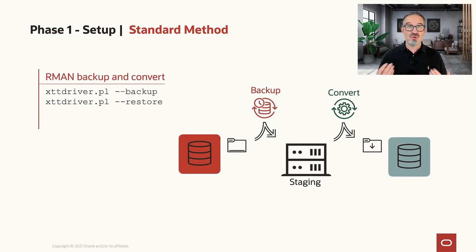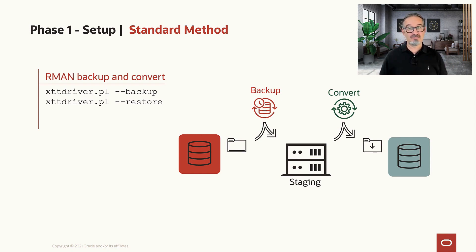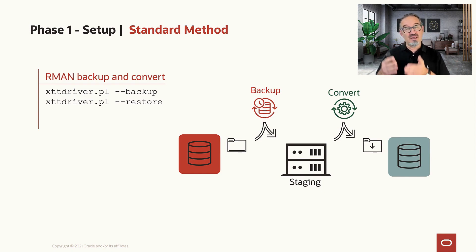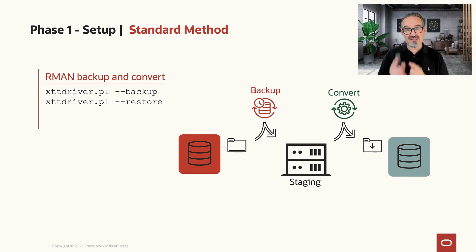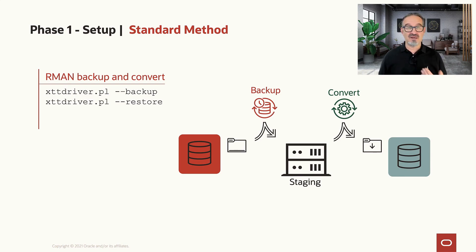There are two options. First, the standard method supported by these scripts is doing a backup of the table spaces. When using the backup approach, you need staging space, because backup, restore, and convert can't happen in one pass. The backup gets written into staging space, and from there we grab it, restore it, and convert it. It's a two-phase approach — always remember that staging space. In the Perl script notation, we use XTD driver PL with --backup and --restore for these actions.